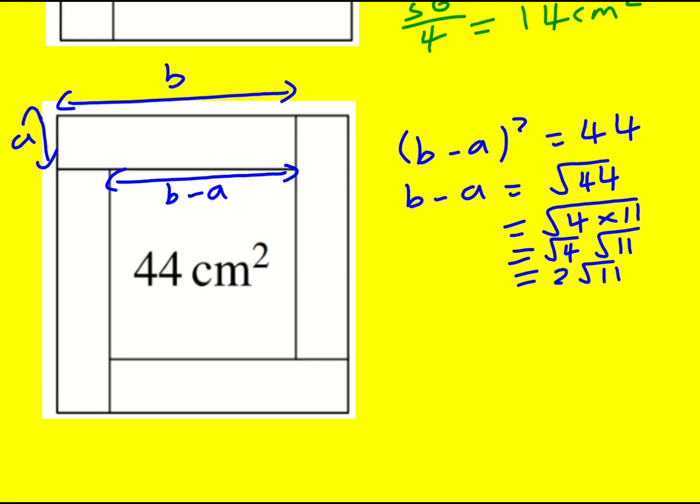As I had before, I can also write that B plus A is equal to 10. And what I actually have here is something called simultaneous equations, two equations involving B and A. And if I add them together, then the A's cancel and I'm left with 2B is equal to 10 plus 2 root 11. So B is going to be 5 plus root 11.